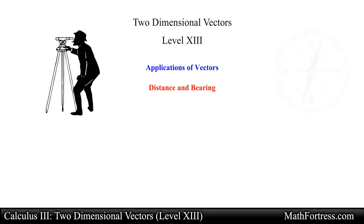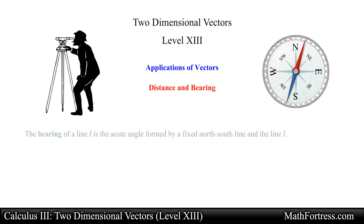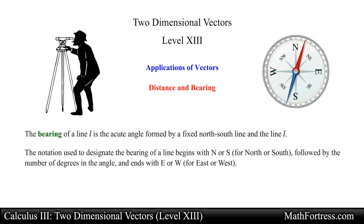In the fields of surveying and navigation, the bearing of a line L is the acute angle formed by a fixed north-south line and the line L. The notation used to designate the bearing of a line begins with N or S for north or south, followed by the number of degrees in the angle, and ends with E or W for east or west. All bearings are measured in a horizontal plane.